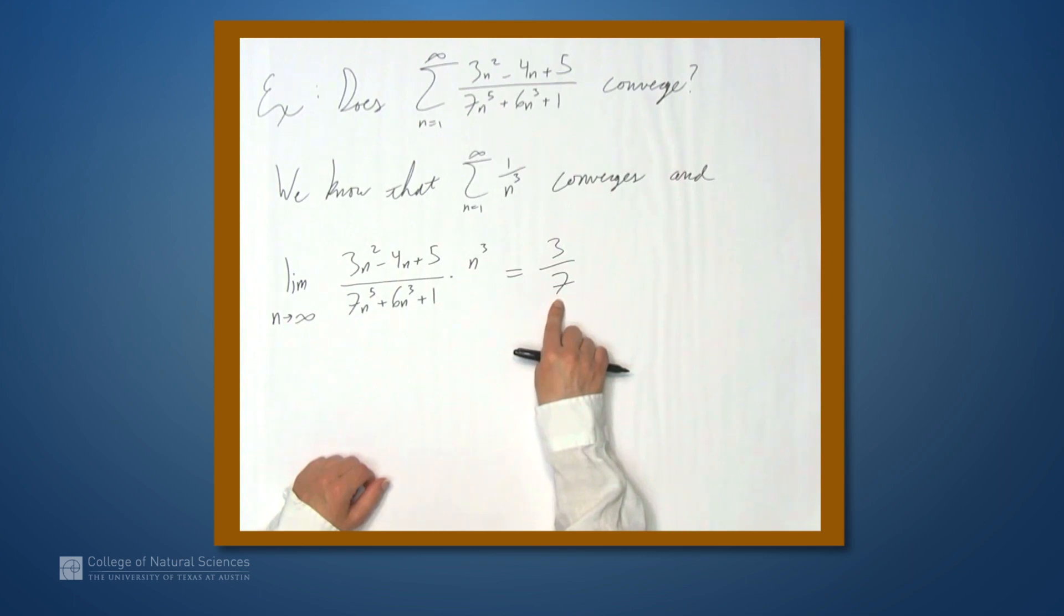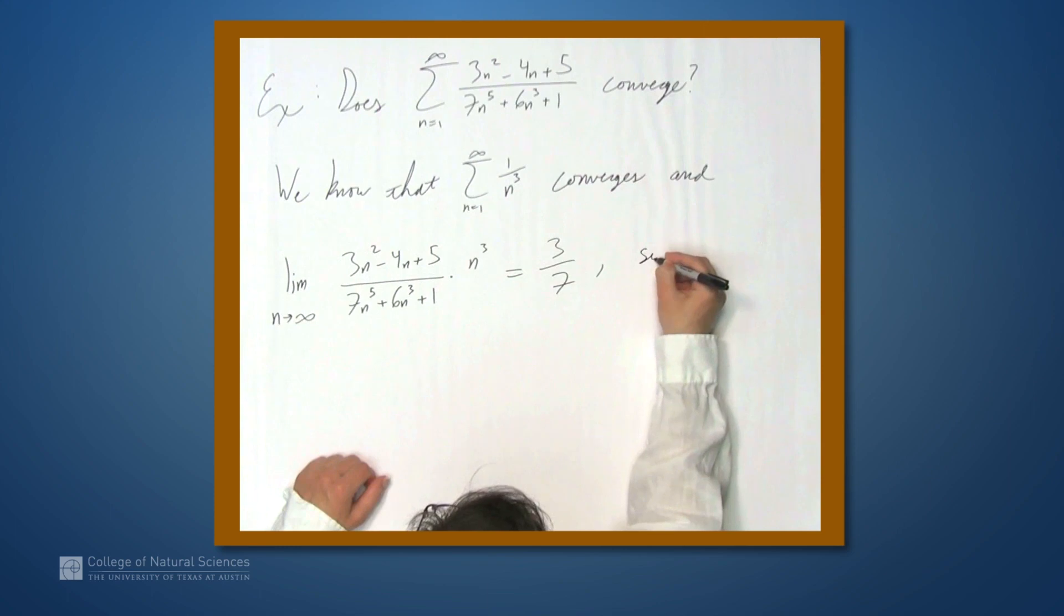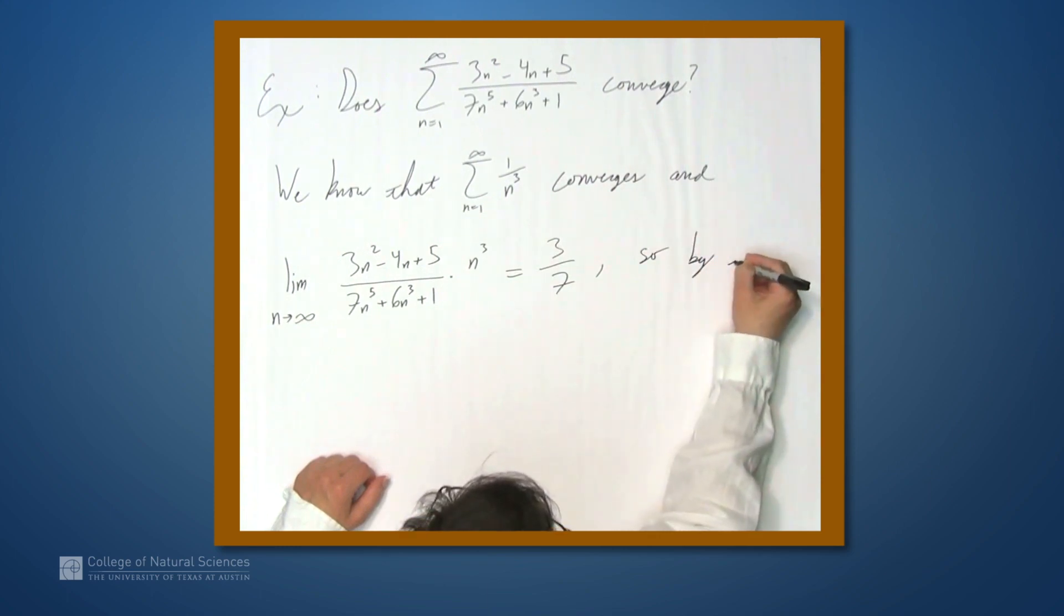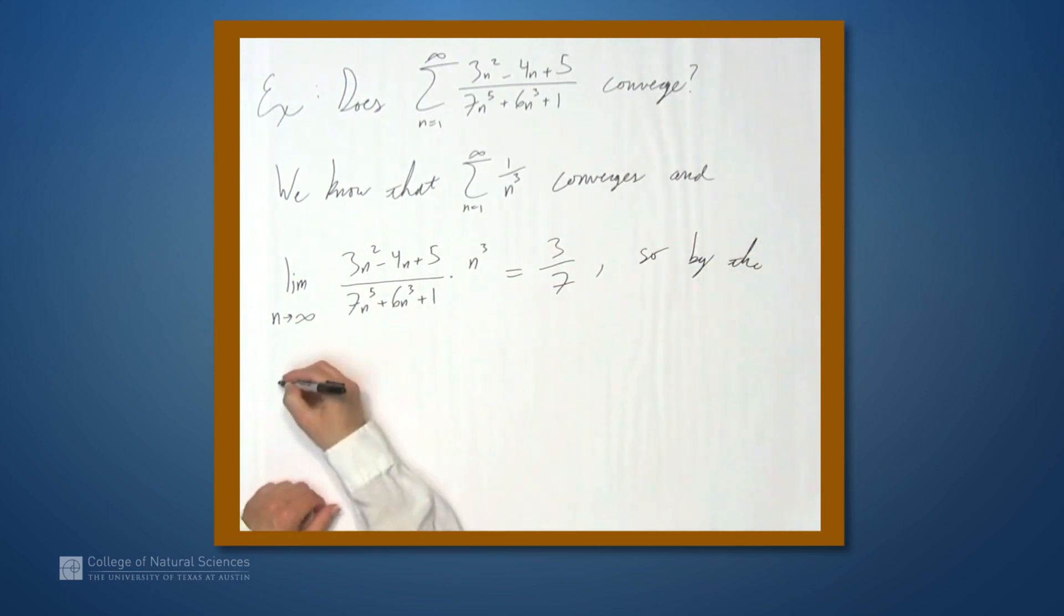So the limit exists, it's positive, and since this series converges by the limit comparison test, the original series converges.